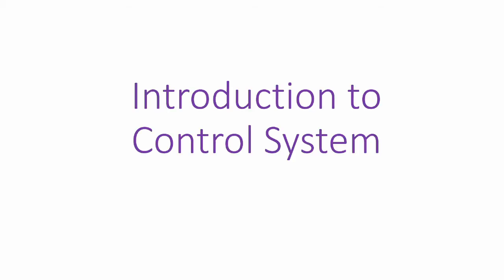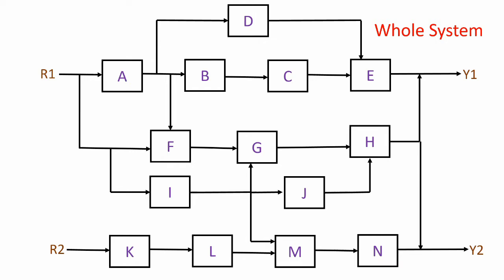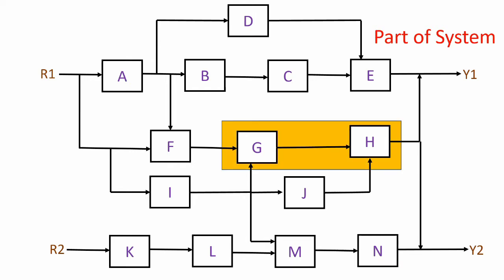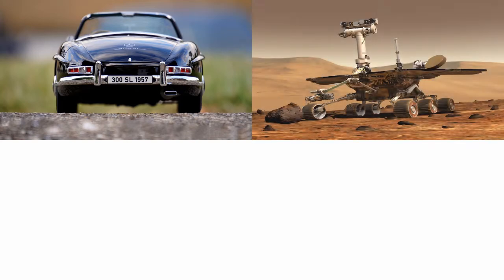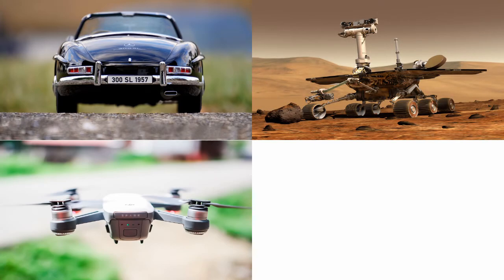Hi, this is Merlin and this is the first video in a series about control theory. In this video, I will give you an introduction to control systems. In a control system, we want to control the behavior of the system according to our needs. It can be a large system or just a part of the system. Applications of control systems include automobiles, robotics, quadcopters, spacecraft, etc.